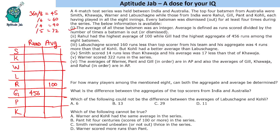Rahul's average is 100, so his runs must be a multiple of 100. Since each batsman is out at least 4 times, his minimum runs are 400. If he were out 5 times his total would be 500, but Gil has the highest total at 456. So Rahul scored exactly 400 runs. For Gil's average with 456 total: dividing by 6 gives 76, dividing by 8 gives 57, so his average can be 76 or 57.